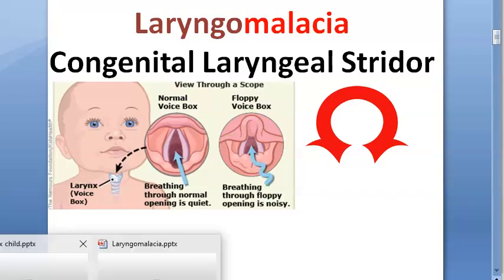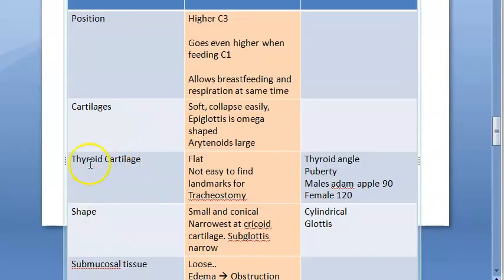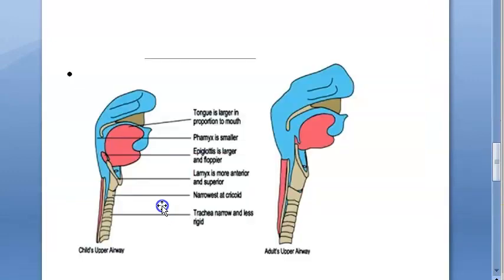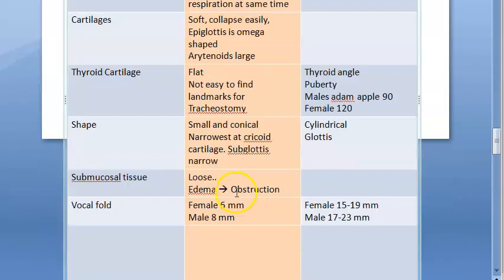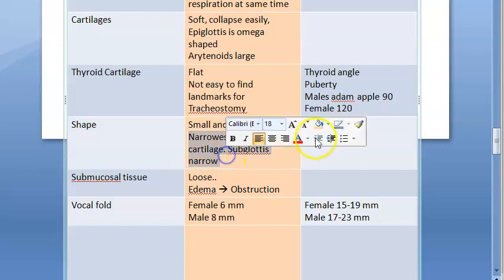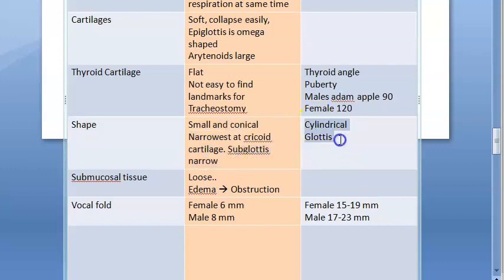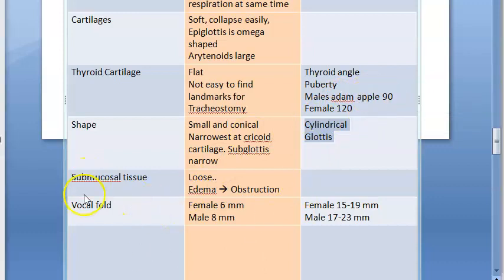The thyroid cartilage in a child will be flat, so it is not easy to find for tracheostomy. In adults, the thyroid angle is very prominent — Adam's apple, 90 degrees — and this develops at puberty. The shape of the larynx in a child is small and conical; the narrowest part is at the cricoid cartilage, so the subglottis is narrow. In adults, the glottis and subglottis are the same width because the larynx is cylindrical.